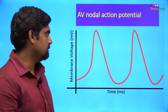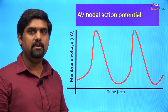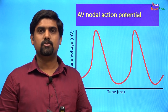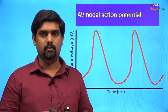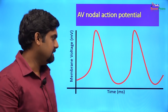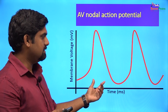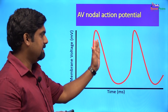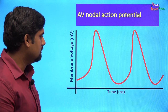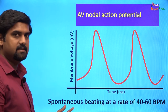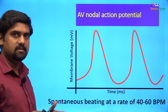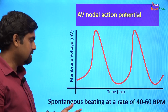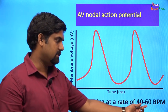Impulses from the atria can spread to the AV node to produce an AV nodal action potential, traveling through atrial myocytes or through internodal pathways from the SA node. The morphology of the AV nodal action potential is similar to the SA nodal action potential, with a slow diastolic depolarization phase, a depolarization phase, and a repolarization phase. If the SA node is diseased and impulses are not coming from it, the AV node will function as the pacemaker, generating its own rhythm at a rate of about 40 to 60 beats per minute.